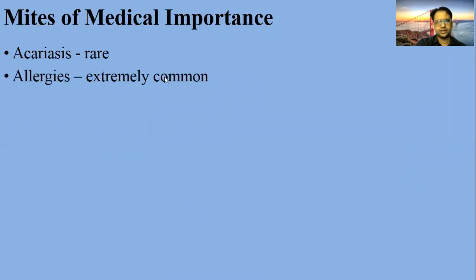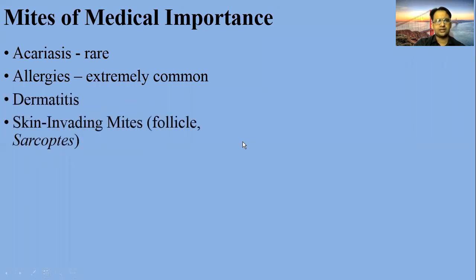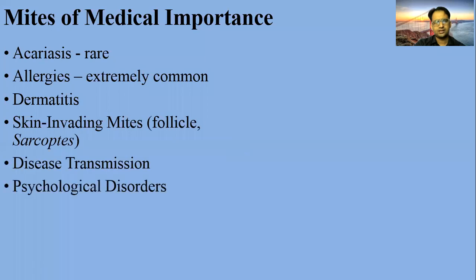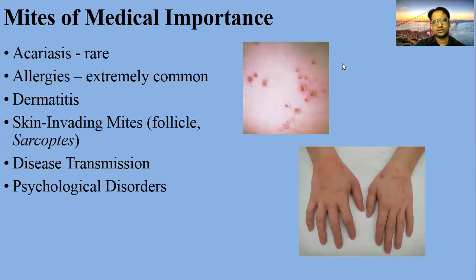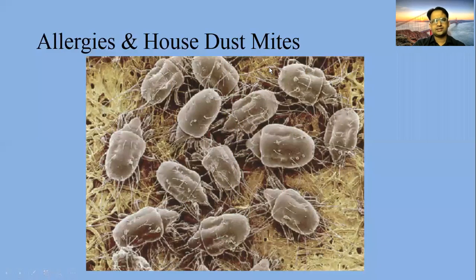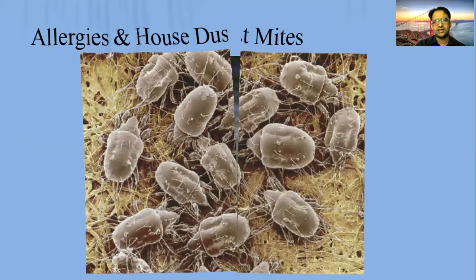Acariasis is a common disease caused by mites. They also cause allergies, which are extremely common, and dermatitis — a skin infection. Skin-invading mites include follicle mites and scabies mites. Mites can also transmit different types of germs and diseases. House dust mites are a very common source of allergies, which cause a range of allergic reactions.